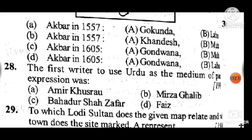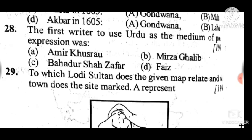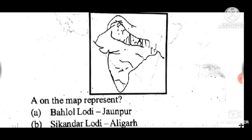Question 28: The first writer to use Urdu as a medium of poetic expression was — answer is A, Amir Khusrau. Question 29 is a map-based question: which Lodi Sultanate does the map relate to and which town does marker A represent? Answer is A — Bahlul Lodi; A is Jaunpur, which was controlled by Bahlul Lodi at the time.